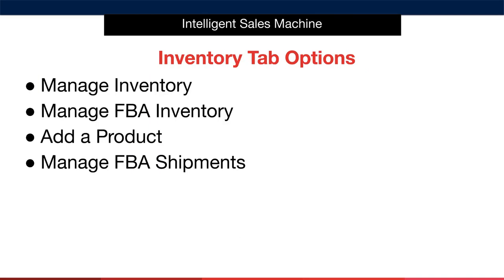Earlier I mentioned the inventory tab inside the main menu area to the top left-hand side — this is what we are going to focus on for this module. There are a number of options from the main menu inventory tab. The big four that we will concern ourselves with for now are: Manage Inventory, which shows us all of our items with their details that have been installed into the Amazon catalogue.